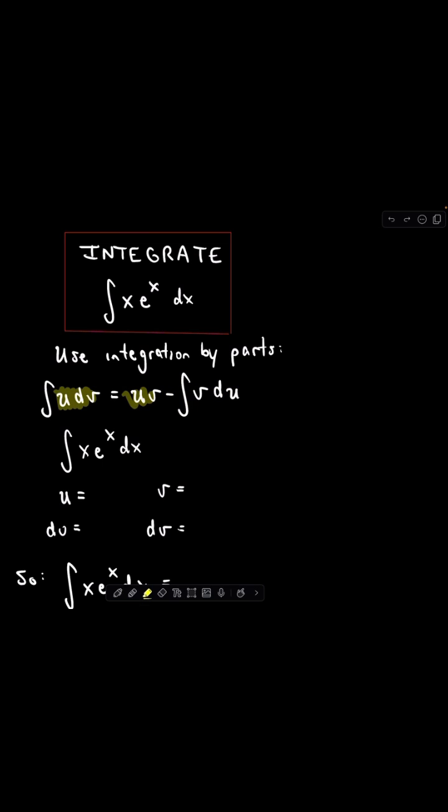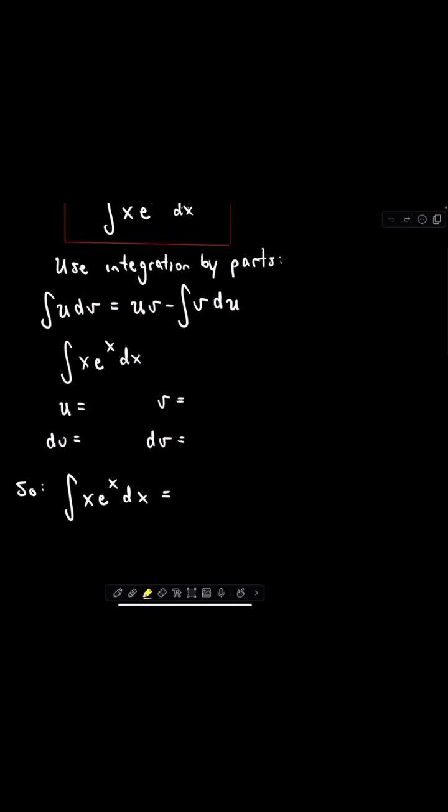So we've got our integral x e to the x. What we have to do is pick something for u and something for dv. I'm going to pick u to be equal to x,